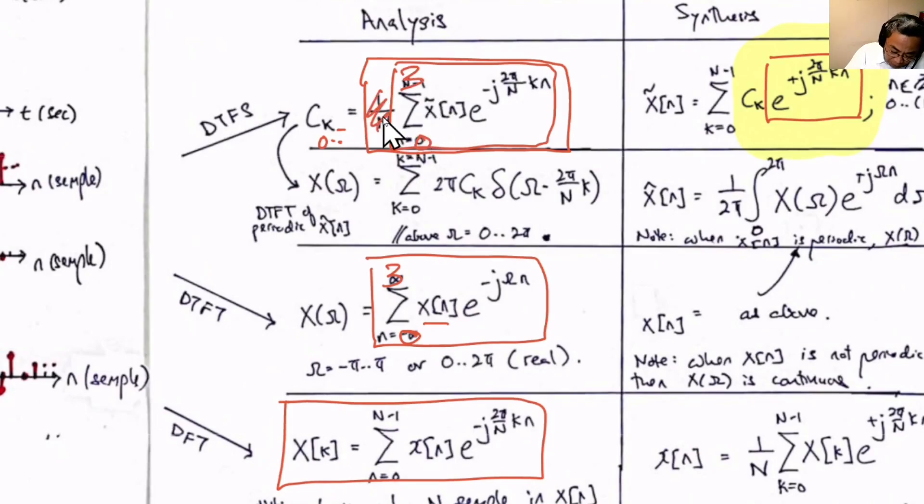So once we multiply N by Ck, then this 1 over N is gone. Therefore, this equation and this equation will result in the same value once omega is the same.